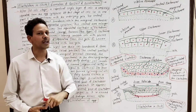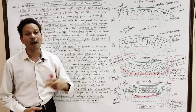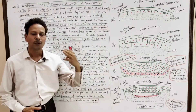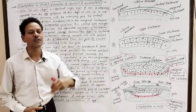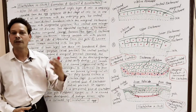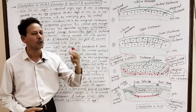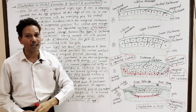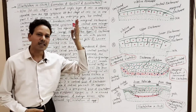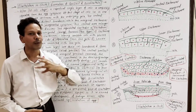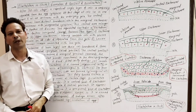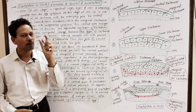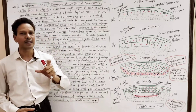In our last lectures we studied the structure of gametes. After gametic structures, we studied the process of fertilization — the fusion of gametes. After fusion, the resultant body was the zygote, a diploid body, and that zygote undergoes cleavage. This means the single-celled zygote is converted into a multicellular body, and this entire process occurs inside the blastodisc or germinal disc.